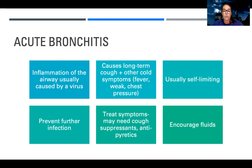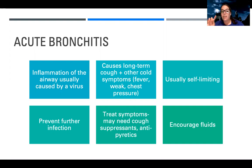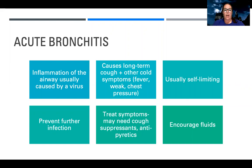First, there's what's called acute bronchitis. A lot of people mix this up with chronic bronchitis, which is related to COPD. Acute bronchitis is an inflammation — 'itis' means inflammation — of the airway, which is the bronchioles, and it's usually caused by a virus.